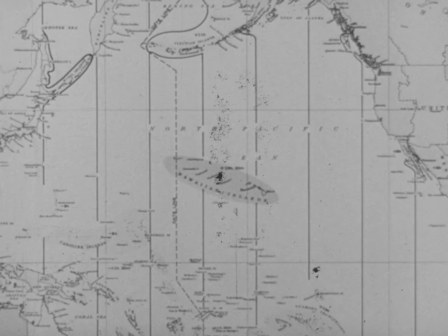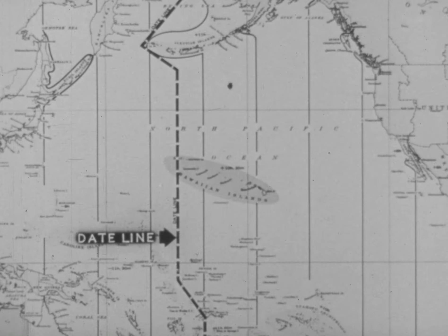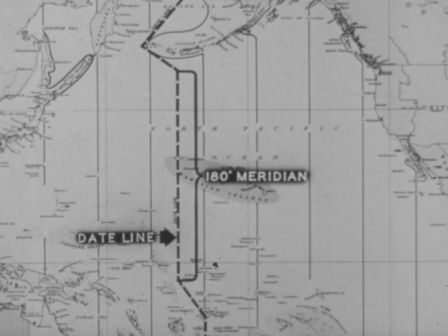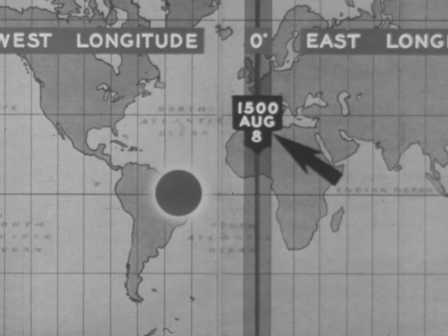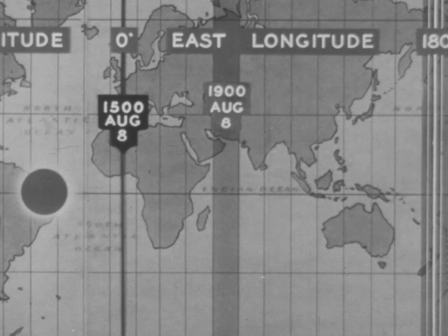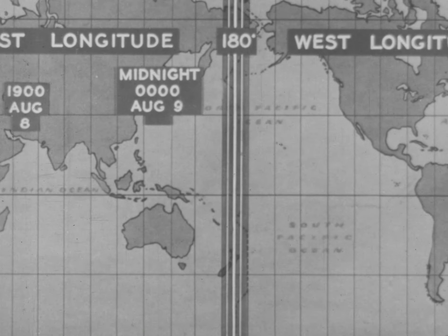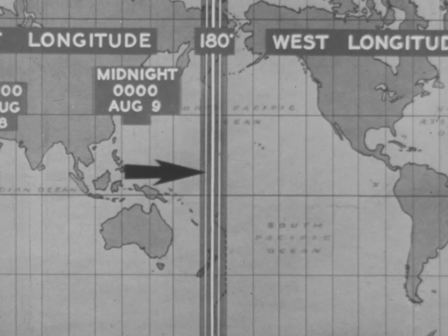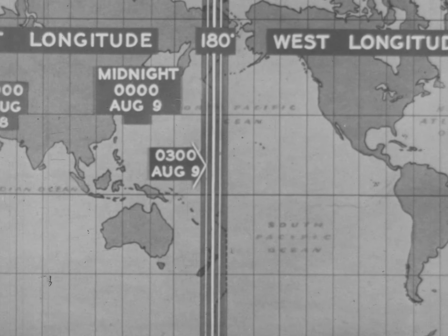In the matter of date, there is one important point which should be considered: the change of date as a ship crosses the international date line. Note that the date line follows the 180-degree meridian for the greater part of its length. Let us suppose that it is 1500 at Greenwich and the date is August 8th. Observe that as we move eastward in longitude, the time becomes later and later, because the sun is farther past the local meridian — until here in 176 degrees east longitude, the zone time is 12 hours later than at Greenwich, and therefore it is 0300 and the date is August 9th.